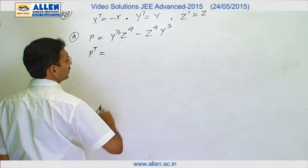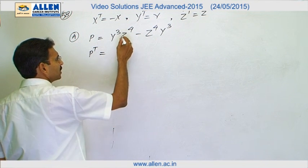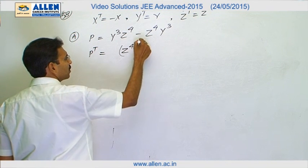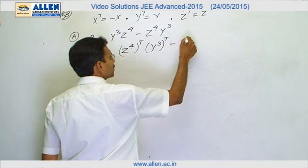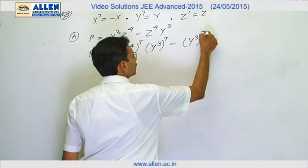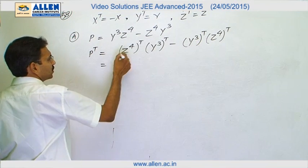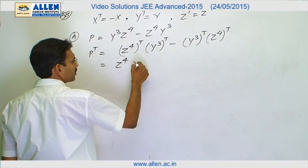So it is Y^q Z^4. We can distribute it directly. Transpose will be distributed to both the matrices and transpose of this can be written as Z^4 transpose Y^q minus transpose of Y^q into transpose of Z^4. Now this will remain as Z^4 because it is symmetric matrix, it is skew symmetric. Therefore,